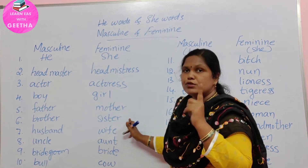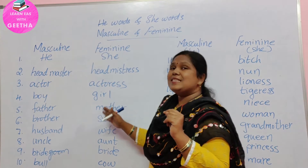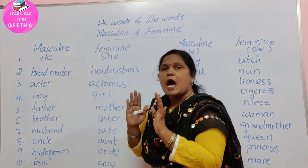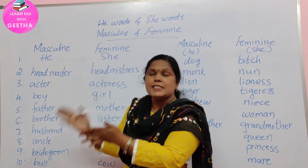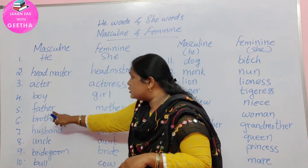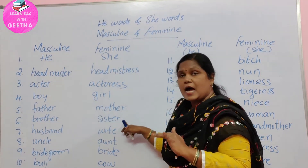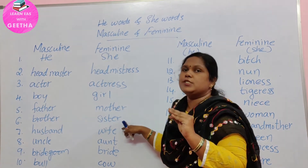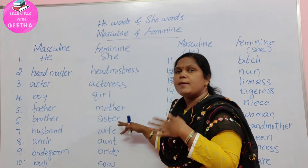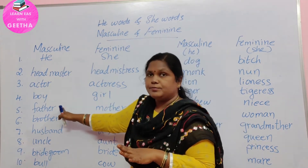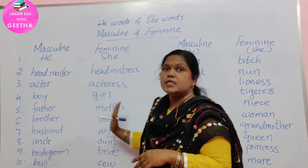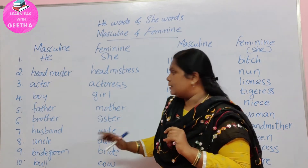See children, while pronouncing, observe this: brother, father — 'R' when it comes at the last, it should be silent. Always when R is at the end, make it silent — you have to swallow it. Father, mother, brother, sister — pronounce them like that.